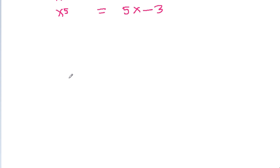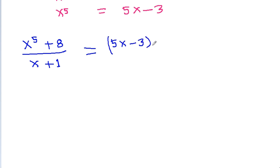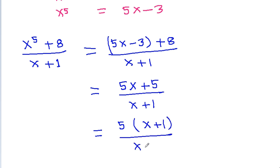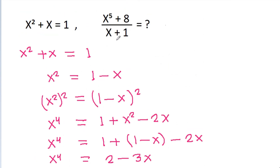We have to find the value of x power 5 plus 8 by x plus 1. Substituting x power 5 as 5x minus 3, we get (5x minus 3 plus 8) by (x plus 1), which is (5x plus 5) by (x plus 1). Taking 5 common gives 5 times (x plus 1) by (x plus 1). The (x plus 1) cancels and the answer is 5.